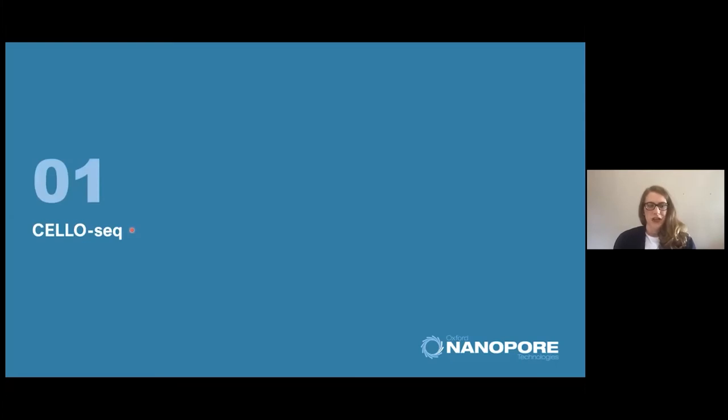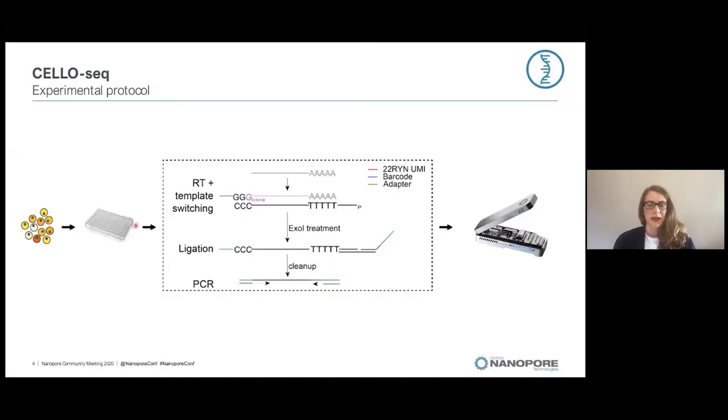Therefore, we have developed CELO-SEEK. CELO-SEEK is a single-cell long-read RNA sequencing method. It is a plate-based method and we prime the reverse transcription reaction with poly-DT primer and use a template switch oligo on the other end.